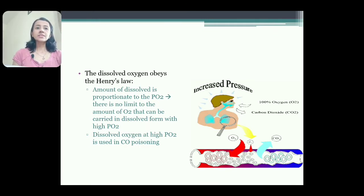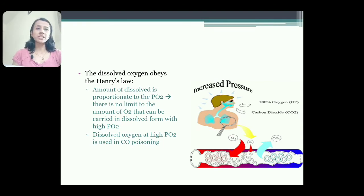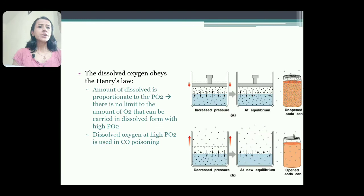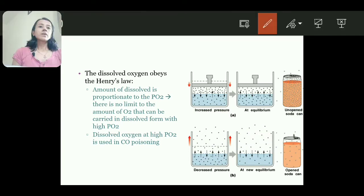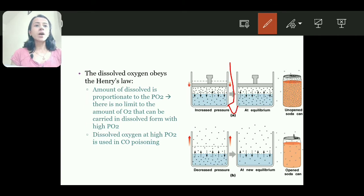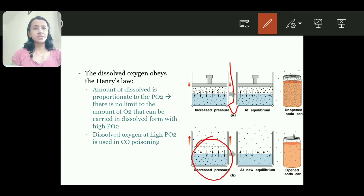This dissolved oxygen can be supplied to the tissue in cases of poisoning like carbon monoxide poisoning. As in case of any gas, when we increase pressure, amount of dissolved form of the gas increases.